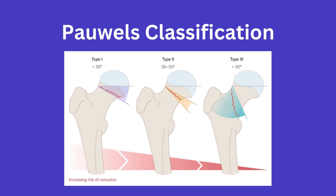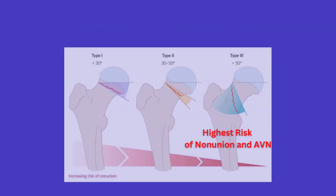With a type 3, you are more likely to have a varus collapse, and as you might expect, this is the most unstable and poses the highest risk for non-union and avascular necrosis.